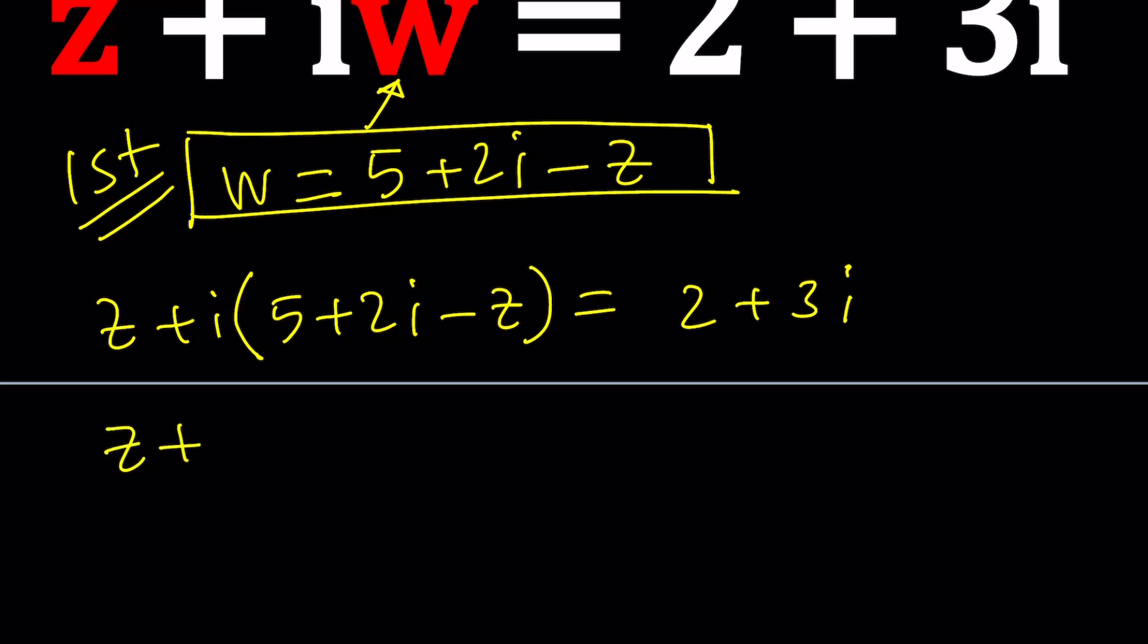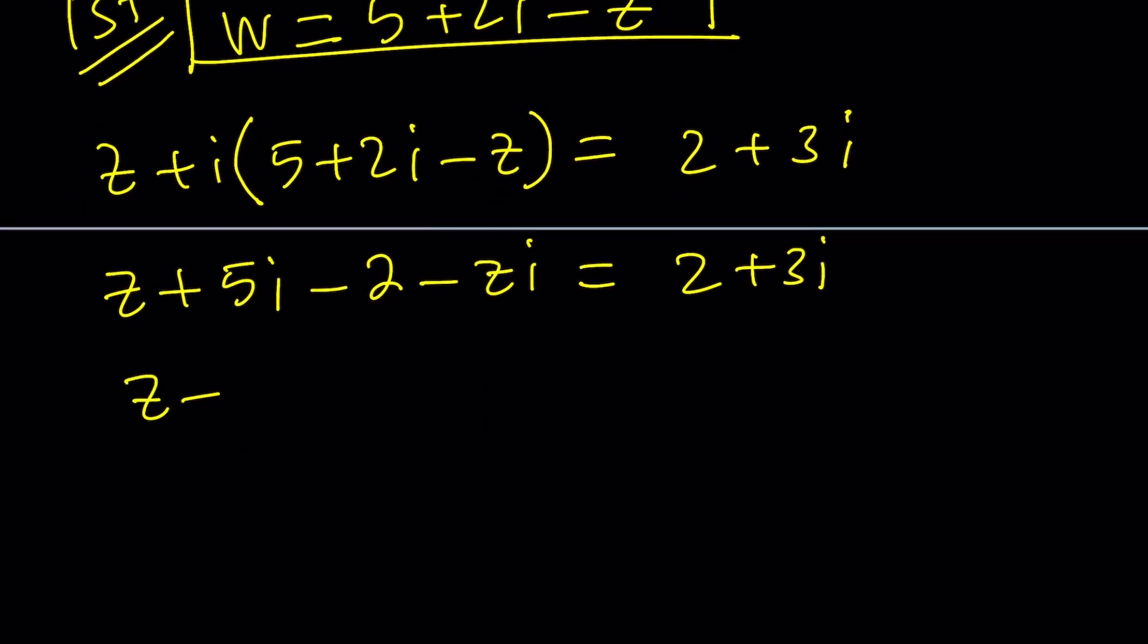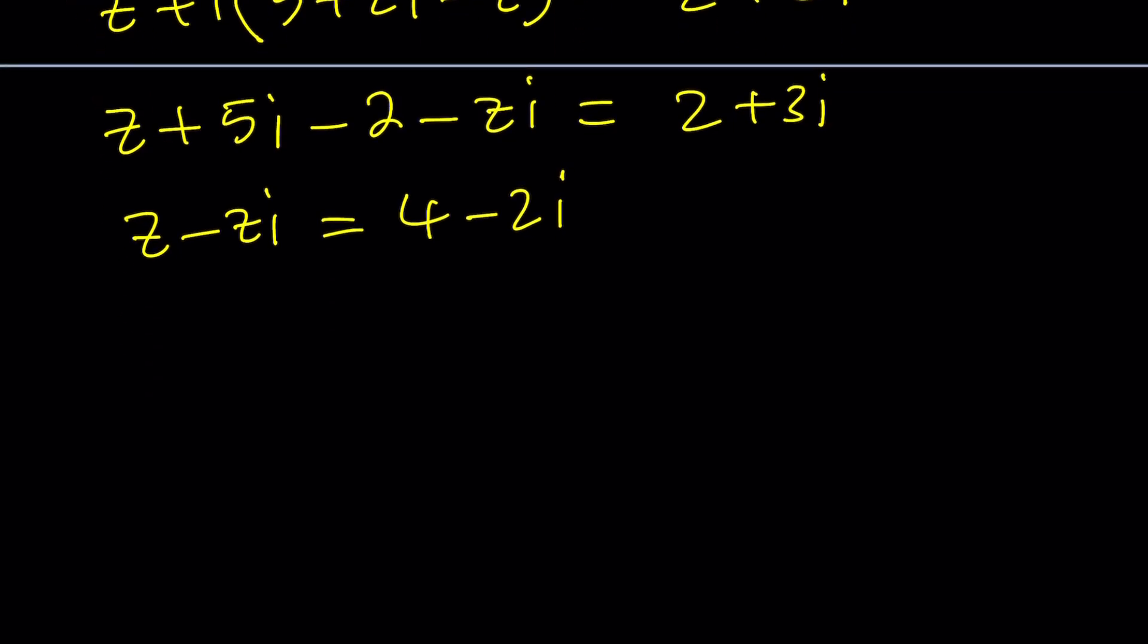z plus let's distribute 5i plus 2i squared which is minus 2 minus zi equals 2 plus 3i. Now I can go ahead and leave the z minus zi here and subtract everything else. That's going to be 2 plus 2 which is 4 and then 3i minus 5i is going to be minus 2i. And now at this point I want to solve for z so let's go ahead and factor the z out.